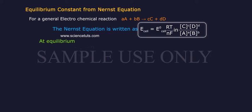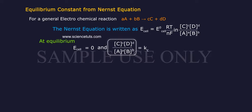At equilibrium, E-cell equals 0. And C-concentration C, D-concentration D by A-concentration A, B-concentration B equals Kc.